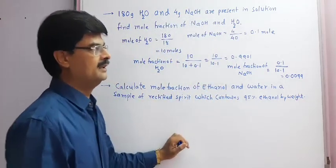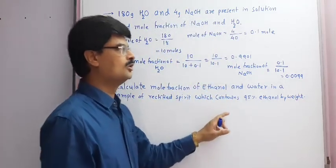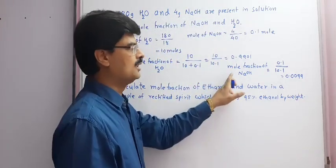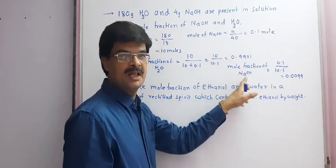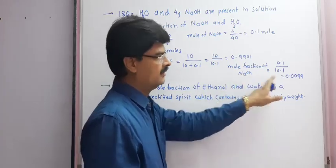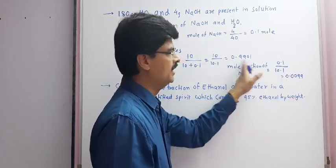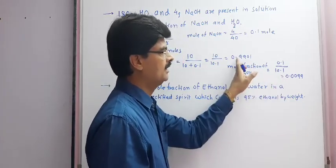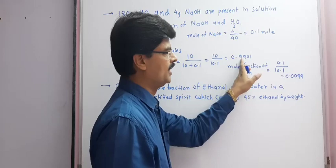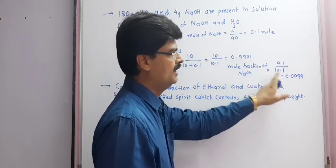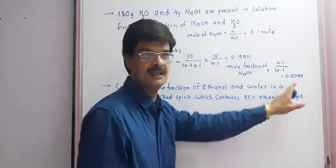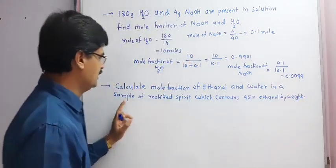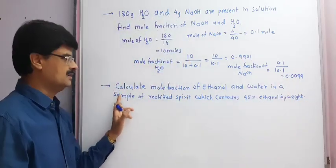We can also verify that total mole fraction of solute and solvent will always be equal to 1: 0.9901 plus 0.0099 equals 1.